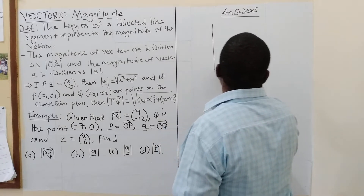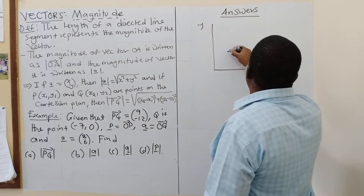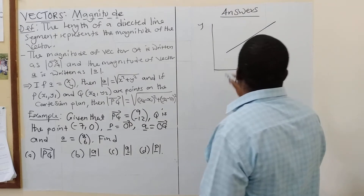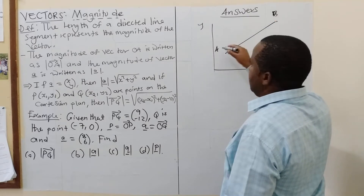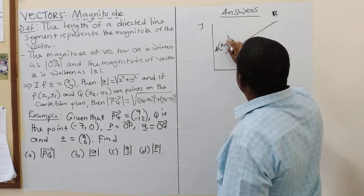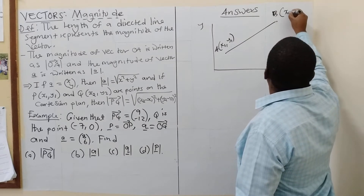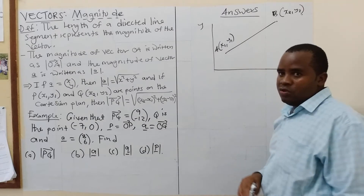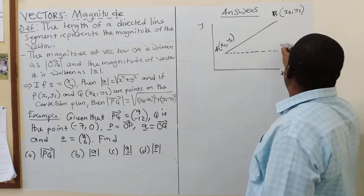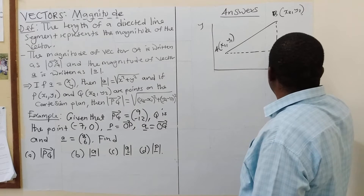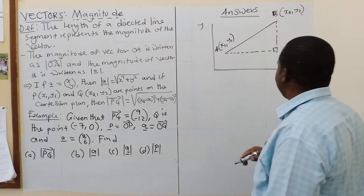So if you have the X-O-Y plane, with X and Y axes, you have a vector here. We call this point A and this point B. You realize that point A will be defined by coordinates X1, Y1, and point B will be X2, Y2. So how do we find the distance between these? You create a right triangle, and that's where the formula comes from. This vector is the hypotenuse, and by the Pythagorean theorem, you are able to find this distance.